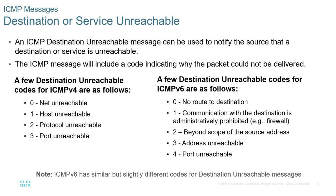Destination or Service Unreachable: An ICMP Destination Unreachable message can be used to notify the source that the destination or service is unreachable. The ICMP message will include a code indicating why the packet could not be delivered. A few destination unreachable codes for ICMPv4 are: 0 - Net Unreachable, 1 - Host Unreachable, 2 - Protocol Unreachable, 3 - Port Unreachable.